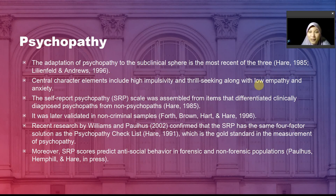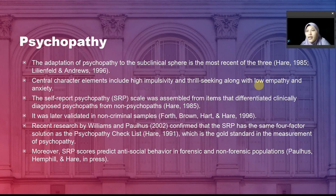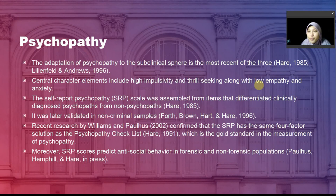William and Paulhus refined the scale along with narcissism and Machiavellianism, creating a new scale to assess those three dimensions, called the Dirty Dozen triad scale. It was later validated in non-criminal samples — common, normal people — and proven by data to be powerful enough to measure this tendency even in a normal population.